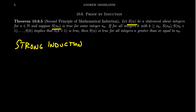Suppose that S of n₀ is true — this is our base case. n₀ could be any integer. If for all integers k such that k is greater than or equal to n₀, knowing that S(n₀), S(n₀+1), S(n₀+2), all the way up to S(k) are true implies that S(k+1) is true, then S(n) is true for all integers greater than or equal to n₀.